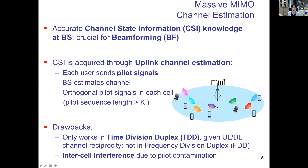However, as with MIMO technology, Massive MIMO also requires accurate knowledge of channel state information at the base station, which is crucial for accurate beamforming. In Massive MIMO, CSI is acquired through uplink channel estimation: each user sends its own pilot signals to the base station, and based on these pilots the base station estimates each channel. Therefore, orthogonal pilot signals are needed within each cell to accurately estimate each user's channel state, meaning the pilot sequence length must be larger than the number of users K in each cell.